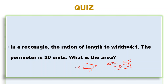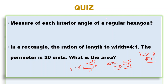Solving 10x equals 20 gives x equals 2. So the width is 2, and the length is 4 times 2, which equals 8. The area of the rectangle is length multiplied by width, which is 8 multiplied by 2, giving an area of 16 square units.